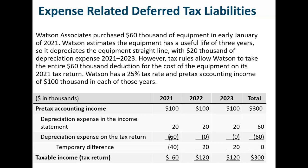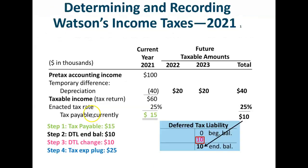Let's walk through the four-step process. Step one: calculate taxes payable. Pre-tax accounting income of $100,000. Add back the $20,000 of straight-line depreciation expense and subtract $60,000 of depreciation expense per the tax return, equals taxable income of $60,000. $60,000 times the 25% tax rate equals income taxes currently payable of $15,000.